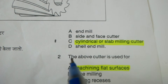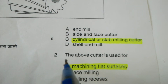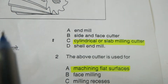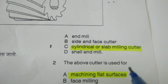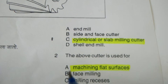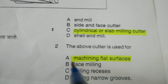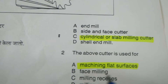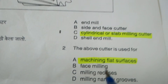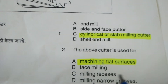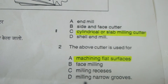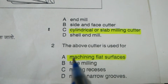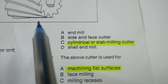Next objective: The above cutter is used for — machining a flat surface, flat milling, milling reshaping, or milling a narrow groove? The correct answer is machining a flat surface.